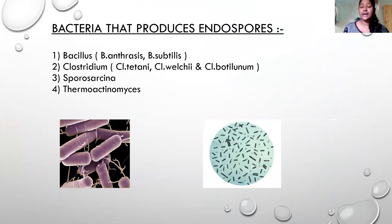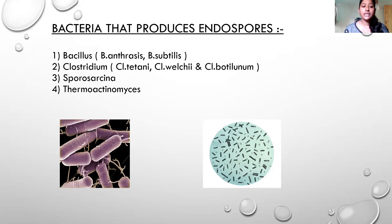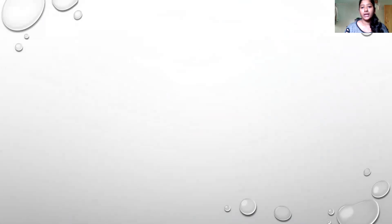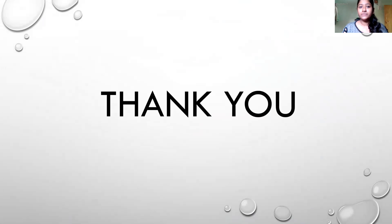These are examples of bacteria that produce endospores. Mostly gram-positive bacteria form endospores. The first one is Bacillus and the second is Clostridium — both are gram-positive bacteria. You can see the purple-colored bacteria: Bacillus species and Clostridium species. Also, Sporosarcina and Thermoactinomyces. That's the end of my presentation — I hope you understood. Thank you very much.